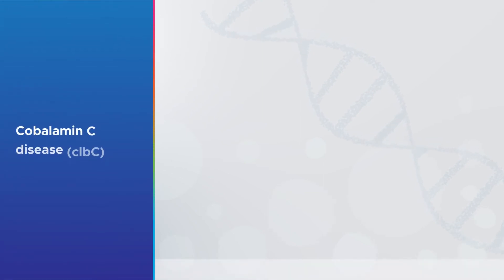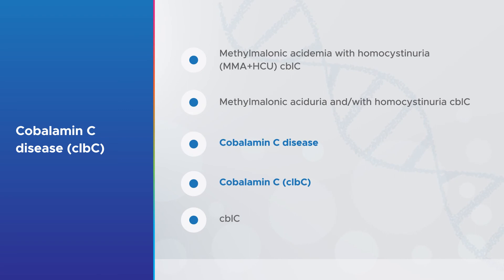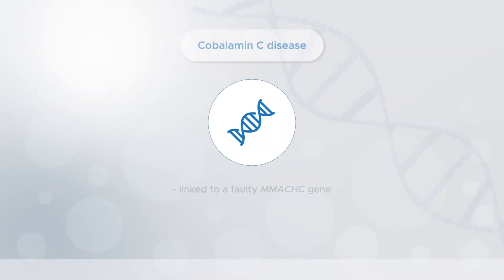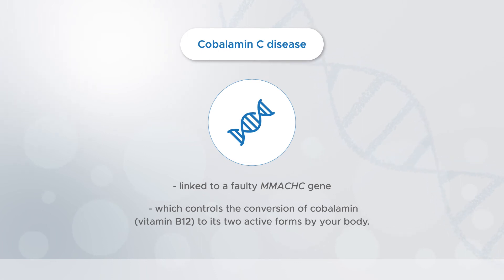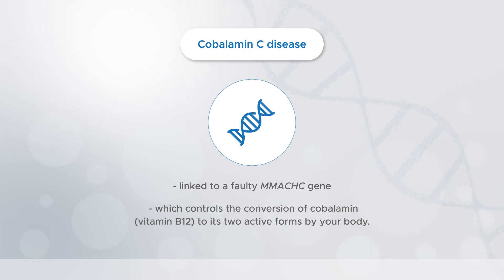The third form of homocystinuria also has lots of different names, but is often referred to as cobalamin C disease or just cobalamin C. This form is caused by a faulty MMACHC gene. In cobalamin C disease, there's a problem with how cobalamin from food is converted into its two active forms by your body.